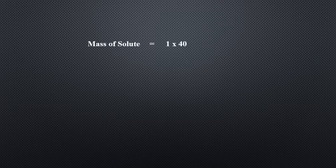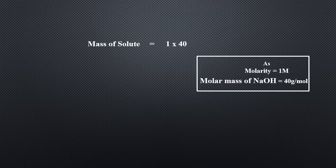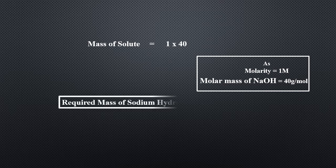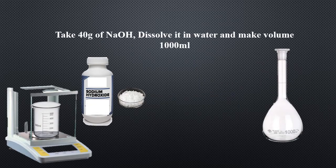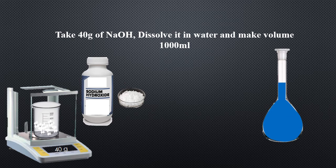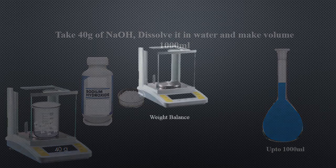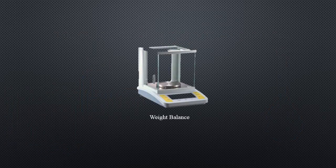To calculate the required mass of sodium hydroxide, multiply molarity by molar mass. Given molarity is 1 mol and molar mass of sodium hydroxide is 40 g/mol: 1 × 40 = 40. This means take 40 grams of sodium hydroxide, dissolve it in water, and make the total volume 1000 ml — this will be a one molar solution of sodium hydroxide.